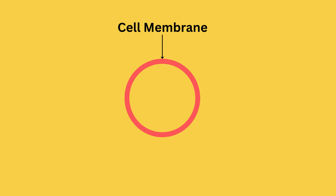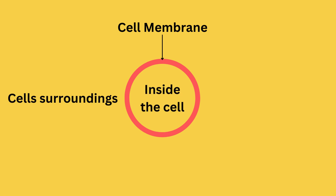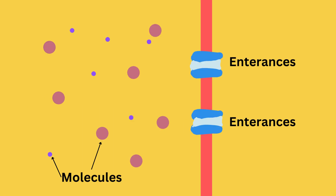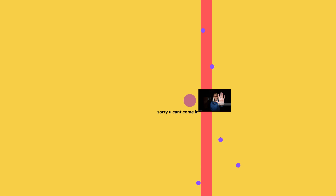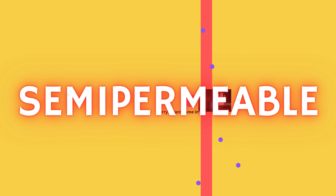The cell membrane acts as a barrier between the cell's surroundings and what's inside the cell. Think of it as a wall that has some entrances to let molecules into and out of the cell. Because the cell membrane has this ability to select which molecules come into and out of the cell, we call it semi-permeable.